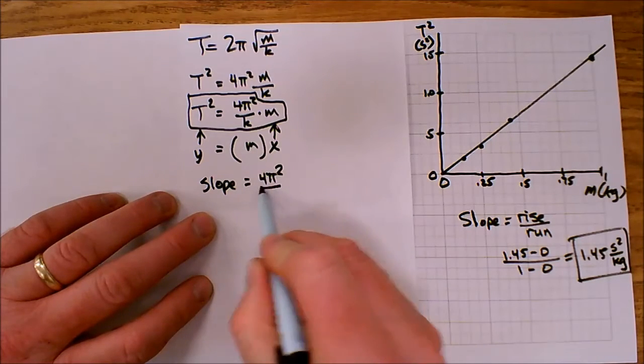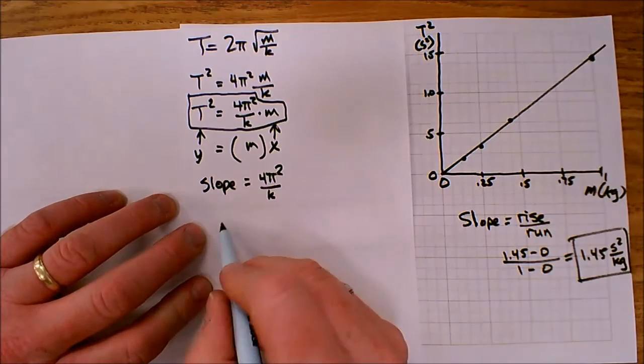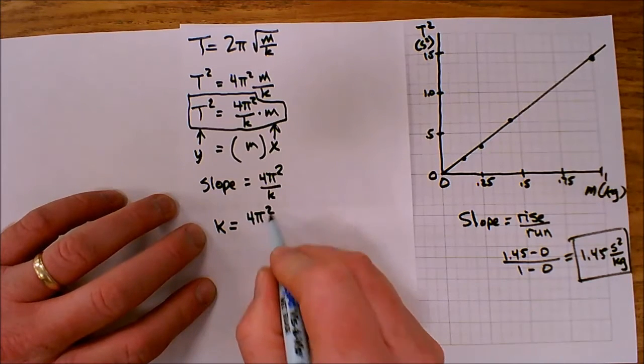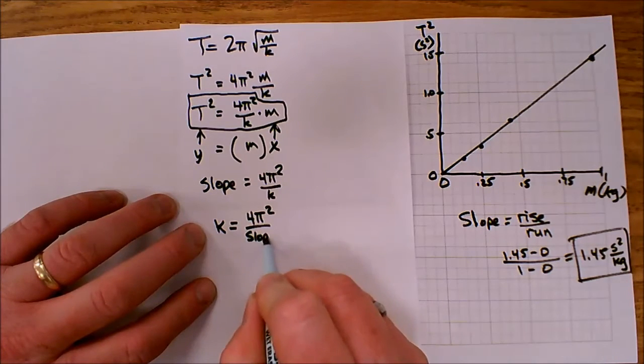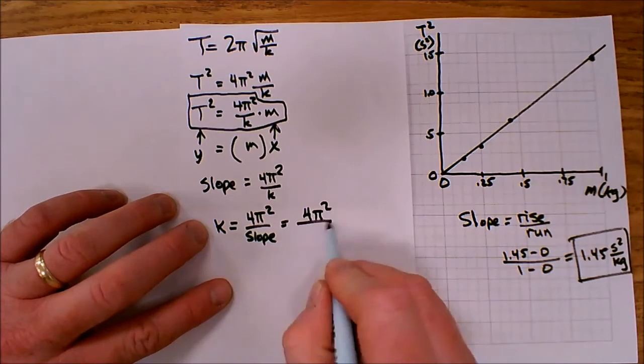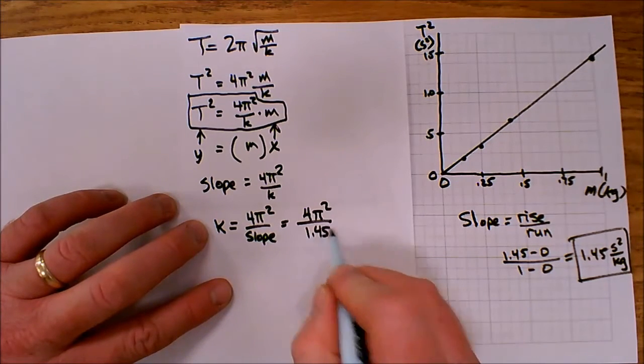So slope equals 4π squared over k. And if I rearrange this, I can see that k, spring constant, is equal to 4π squared divided by my slope. So my spring constant is going to equal 4π squared divided by 1.45.